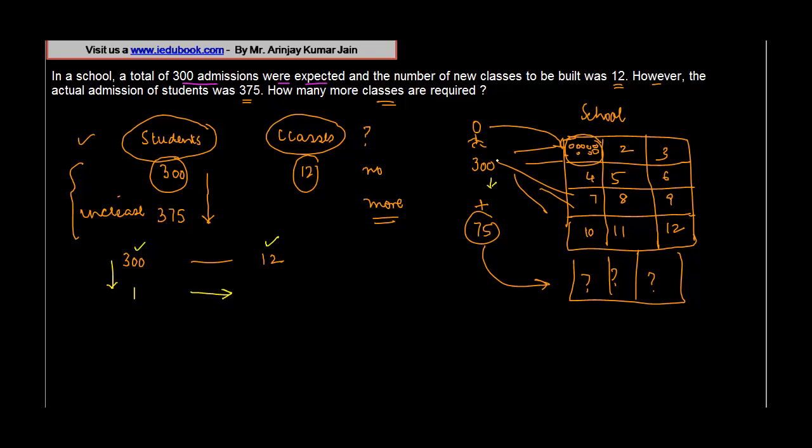Obviously you don't require all these classes - one single student can't go and sit in all the classes. He will be going and sitting somewhere in one class along with the other students. So one student will require less number of classes, therefore 12 upon 300, because lesser students means lesser classes. One student will require 12 by 300 classes. But how many students do we have? We have 375 students.